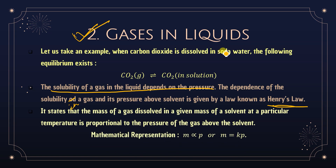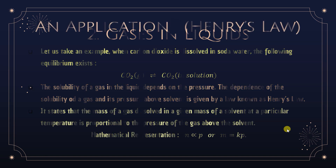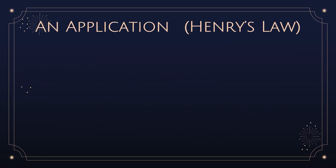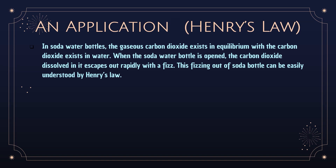Mathematically, Henry's law is expressed as m ∝ p, or m = Kp, where m is the amount of gas dissolved in a particular amount of solvent, p is the pressure, and K is Henry's constant. An application of Henry's law: in soda water bottles, gaseous carbon dioxide exists in equilibrium with carbon dioxide dissolved in water. When the bottle is opened, carbon dioxide escapes out rapidly with a fizz.